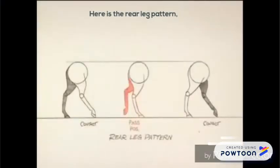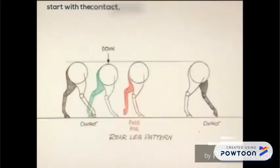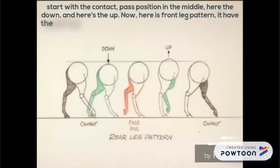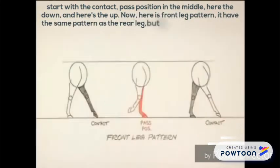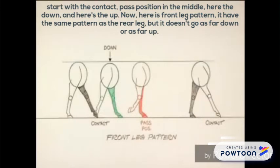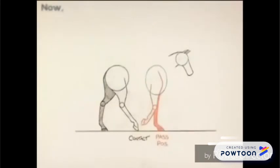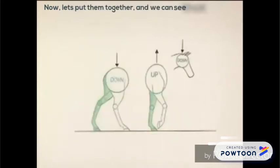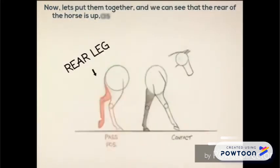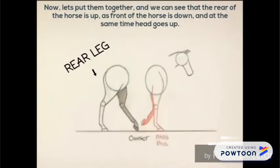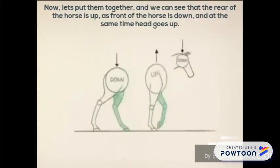Here is the rear leg pattern. Starting with the contact, pass position in the middle, here is the down and here is the up. Now here is the front leg pattern. It has the same pattern as the rear leg, but it doesn't go as far down or as far up. Now let's put them together and we see that the rear of the horse is up as the front of the horse is down.